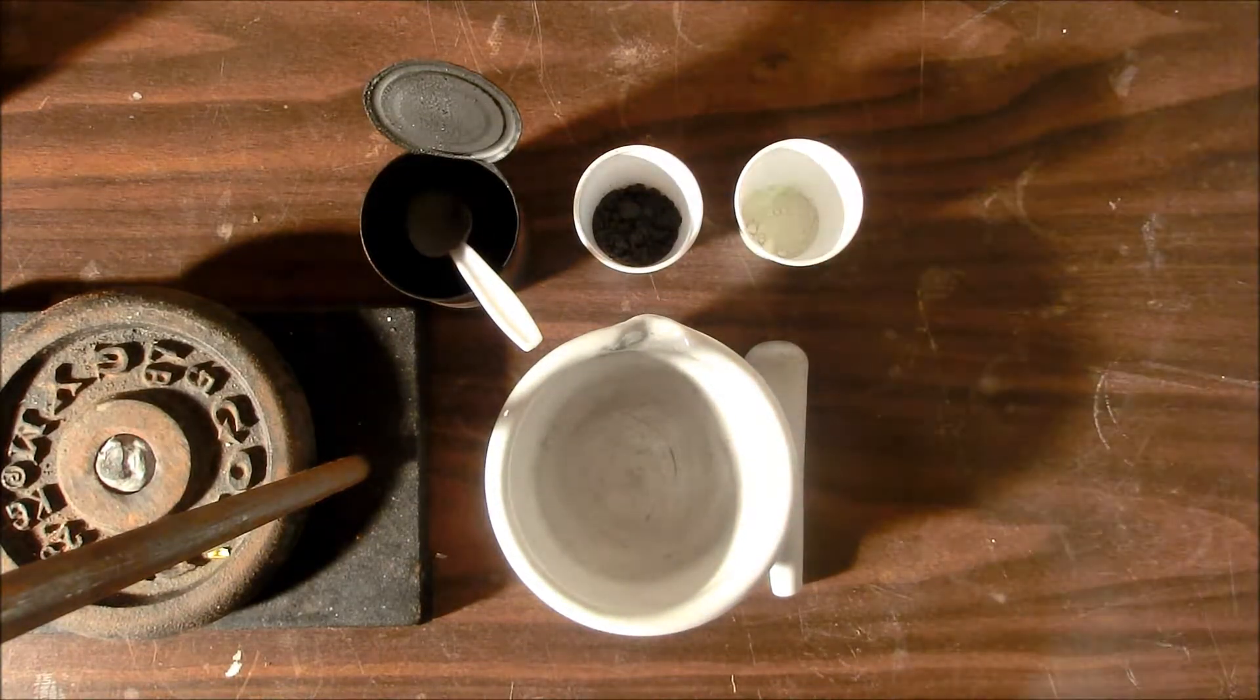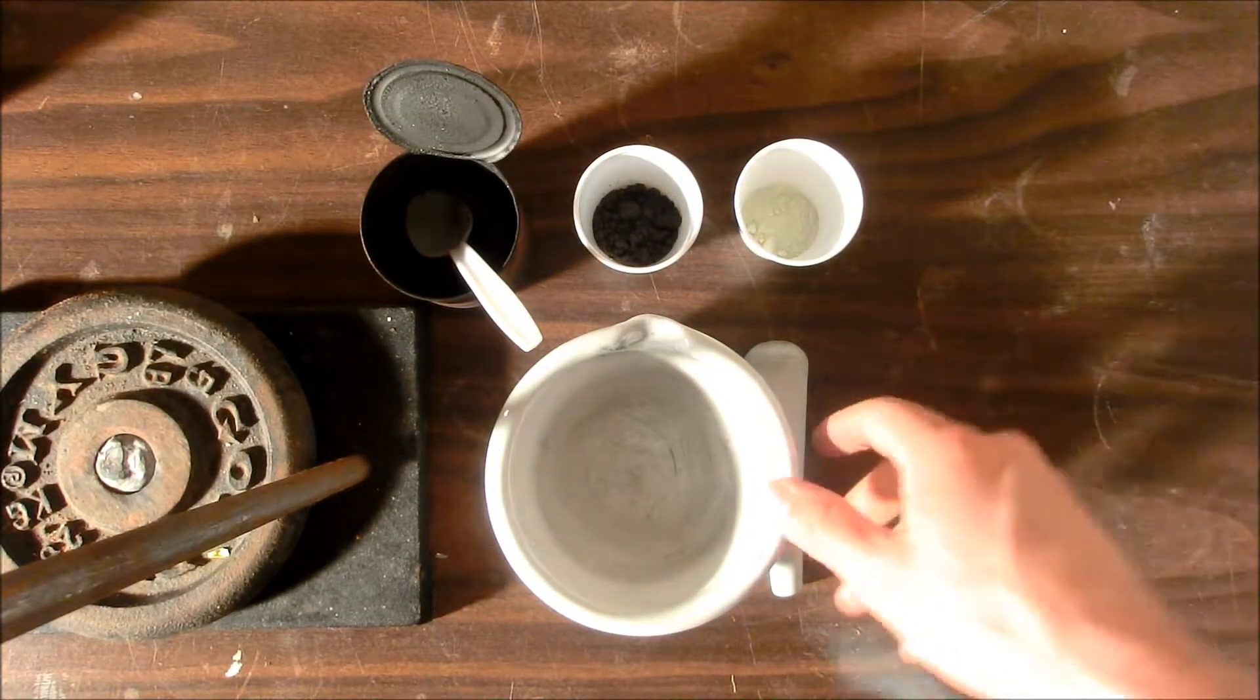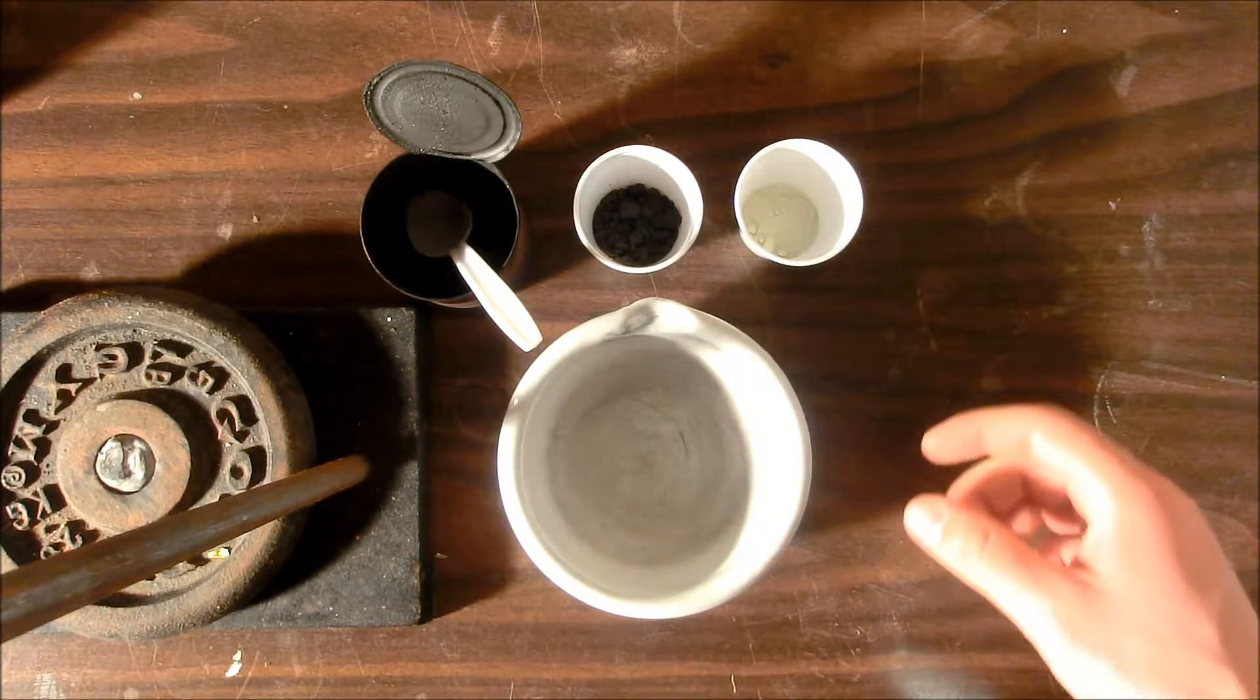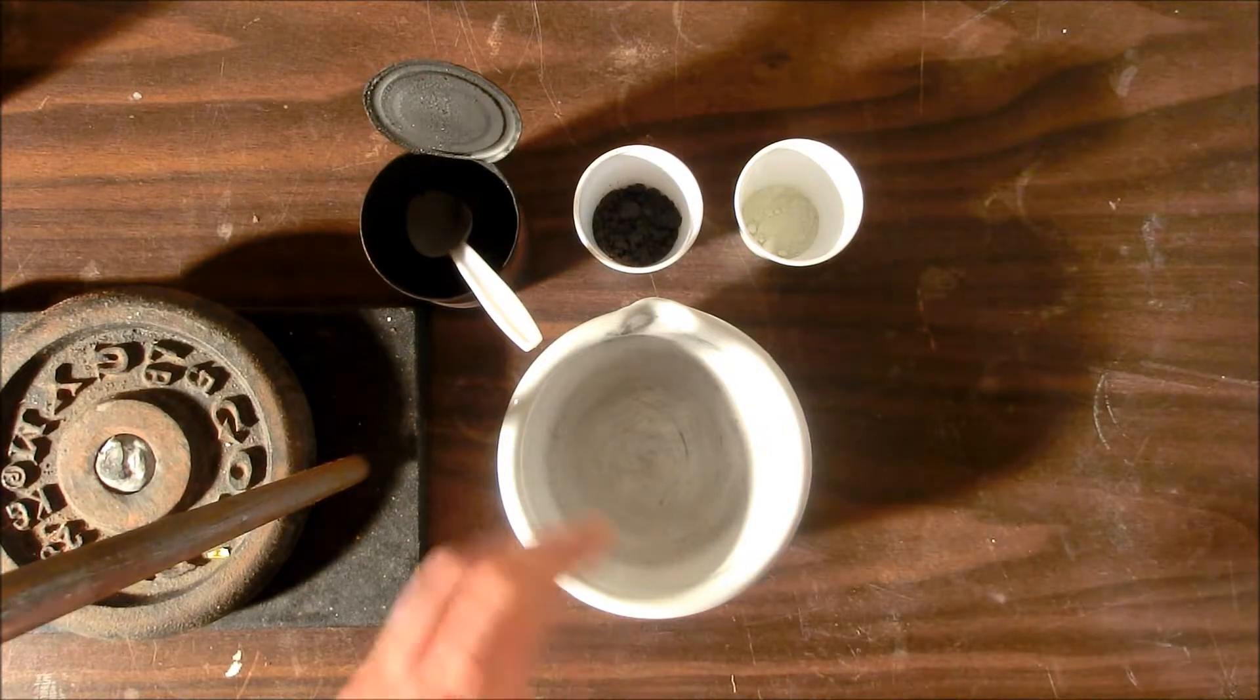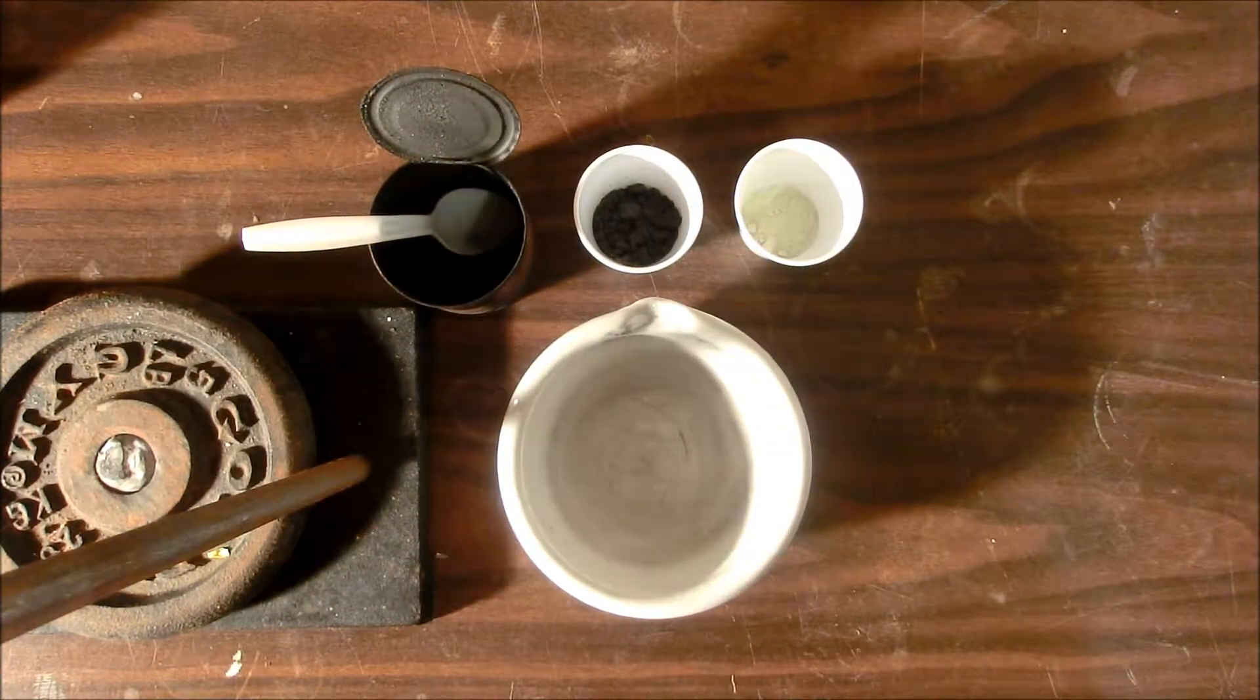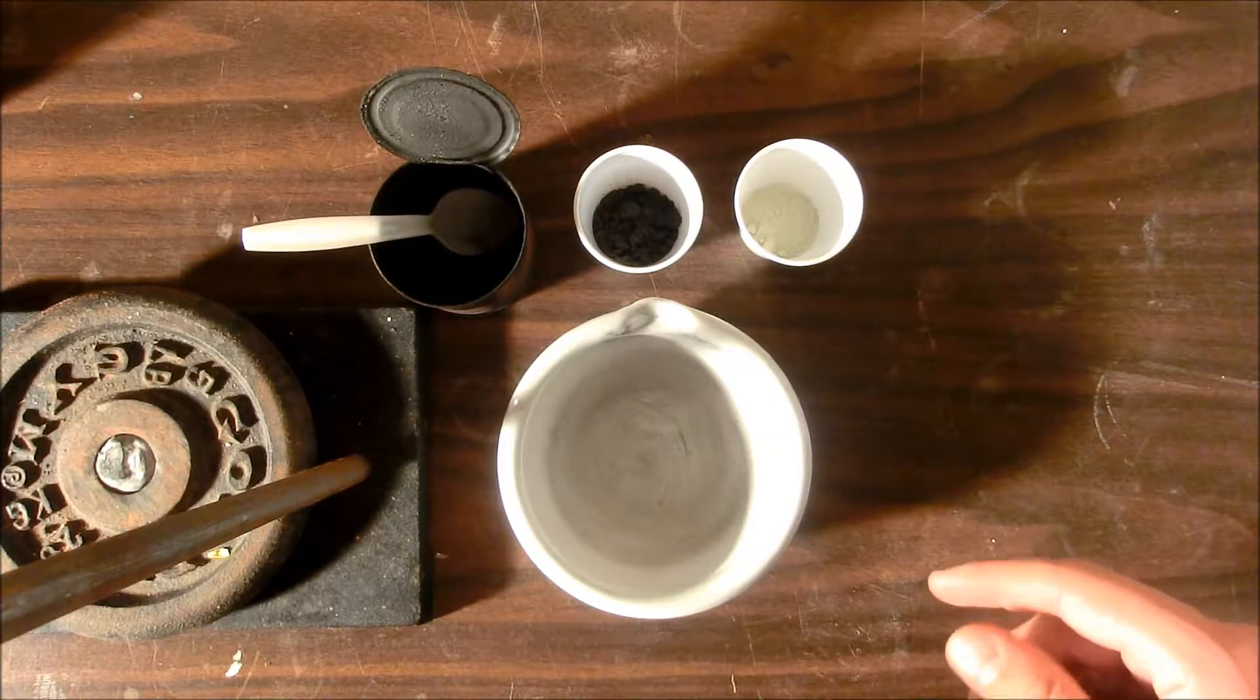So the next thing we're going to do is put these two components into this mortar and pestle, mix them up real good so we have a homogeneous mix, and then I will put them into this steel can and we're going to heat it up until the two react.